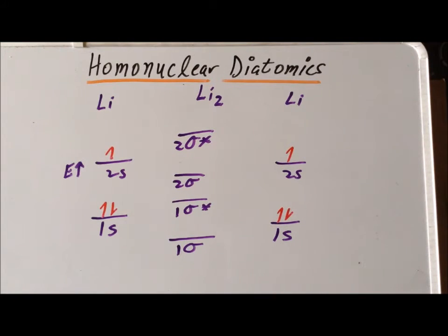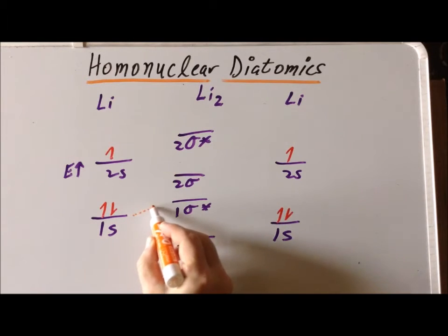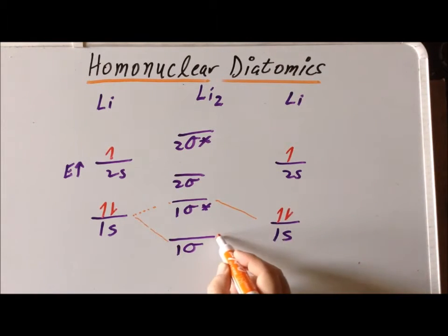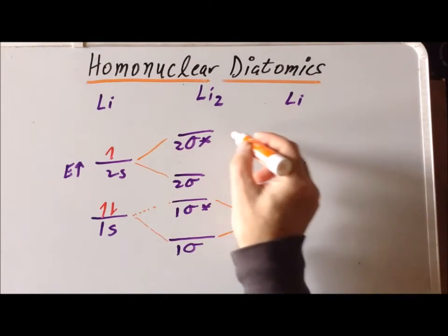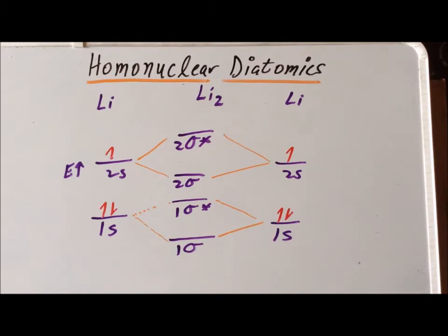We can highlight from which orbitals the MOs were formed by showing a dashed line or a lightly colored line showing the atomic orbitals from which the molecular orbitals were constructed.